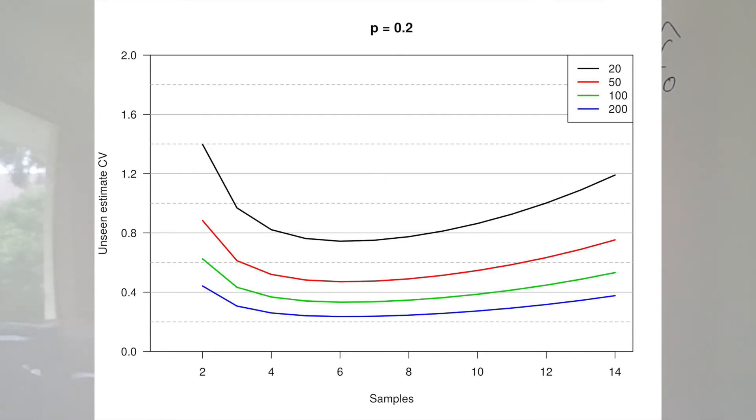And those plots are quite different. Notice that this time instead of that CV always getting smaller and smaller and smaller as the number of samples we take increases, there's actually some minimum number and then that CV starts going up again. So sort of this optimum now.